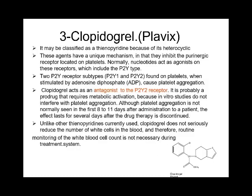Clopidogrel (Plavix) is a thienopyridine with a heterocyclic structure. It works on the purinergic P2Y receptor on platelets, acting as an antagonist on the P2Y12 receptor to block ADP-stimulated platelet aggregation. The effect appears very late — 8 to 11 days after administration — and persists for several days after the drug is stopped.